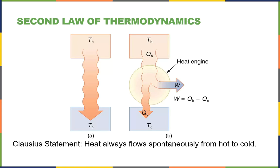The Clausius statement says heat always flows spontaneously from hot to cool. The heat engine sits between the hot and cold reservoirs and converts some of the thermal energy into useful mechanical work. Notice I said 'some' — not all. Another statement of the Second Law is that it is impossible to create a heat engine that converts all the heat put in into useful mechanical work.